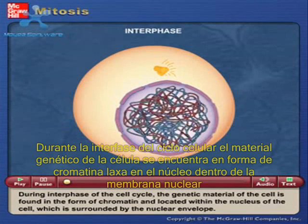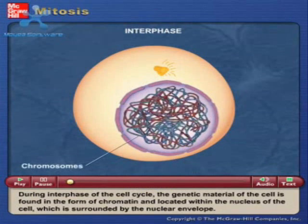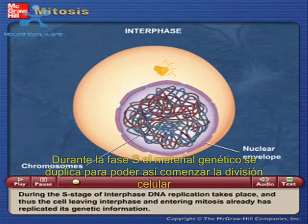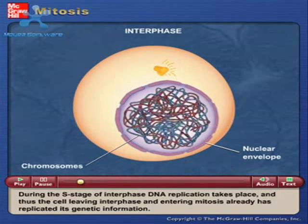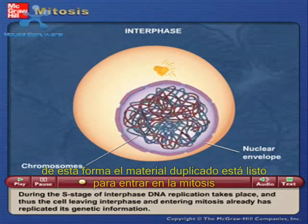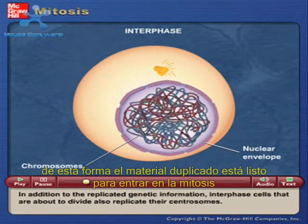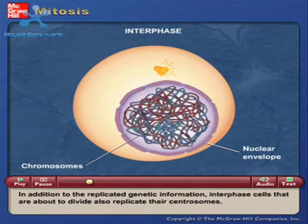During interphase of the cell cycle, the genetic material of the cell is found in the form of chromatin and located within the nucleus of the cell, which is surrounded by the nuclear envelope. During the S stage of interphase, DNA replication takes place, and thus the cell leaving interphase and entering mitosis already has replicated its genetic information. In addition to the replicated genetic information, interphase cells that are about to divide also replicate their centrosomes.